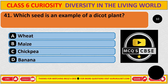Which seed is an example of a dicot plant? The correct answer is C: chickpea.